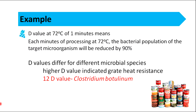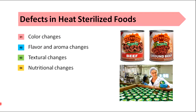Though heat sterilization can improve the shelf life of foods, there are some defects in heat-sterilized foods. The first one is color changes. For example, red oxymyoglobin pigments in meat are converted to brown metmyoglobin during heat sterilization. Also, meat can get a slight brown color due to caramelization and Maillard browning.